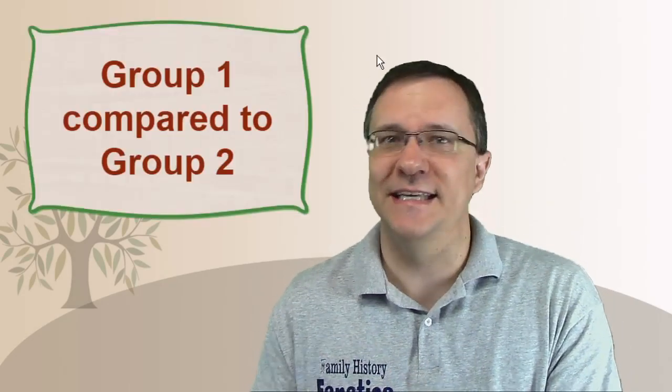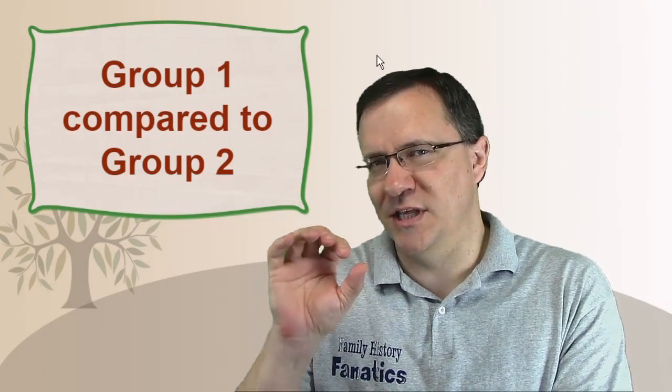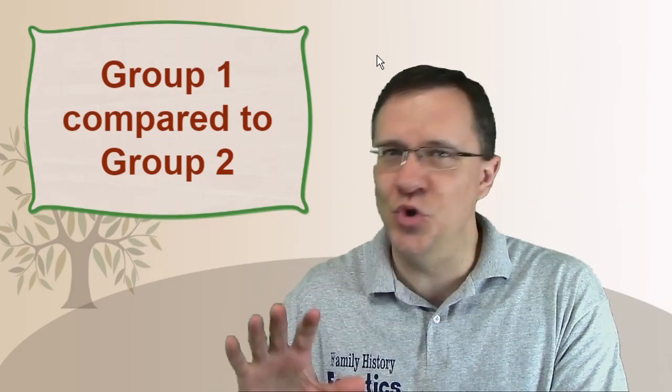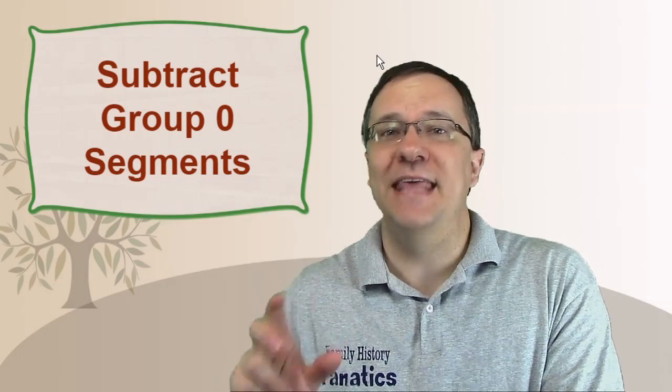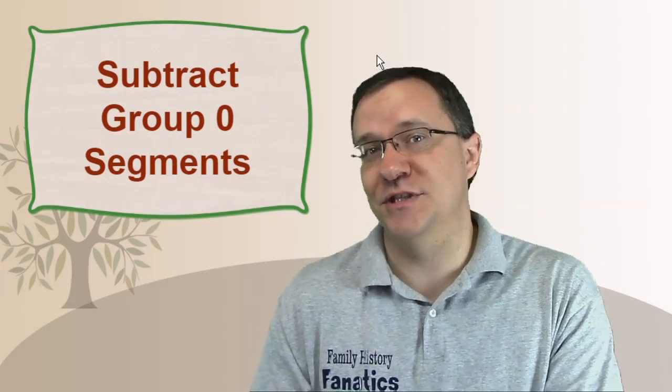Now the concept behind this is you're comparing the DNA between group 1, which is usually the children of that person you're trying to create the DNA for, and group 2, which is other relatives of that person. And then you're subtracting out any DNA that is shared with the spouse or with relatives of the spouse. So group 1 and group 2 where they join together minus the group 0 - that's really the formula that the Lazarus kit is doing.